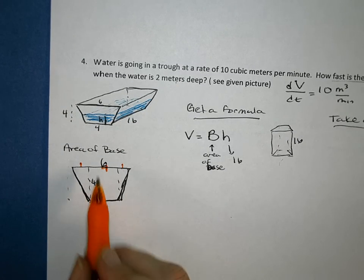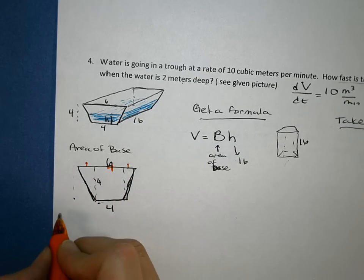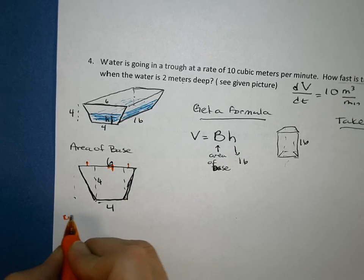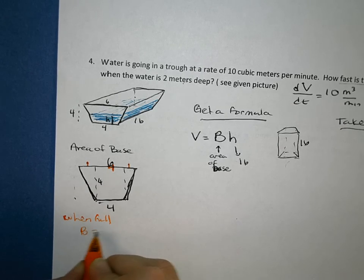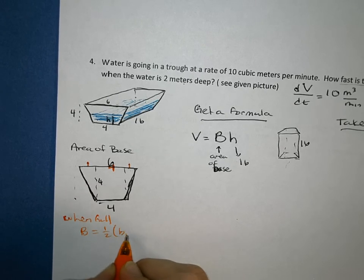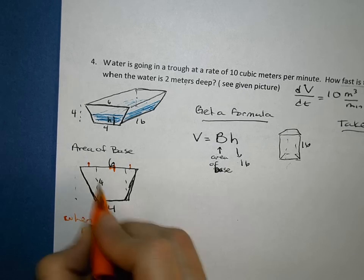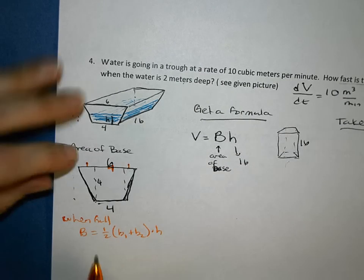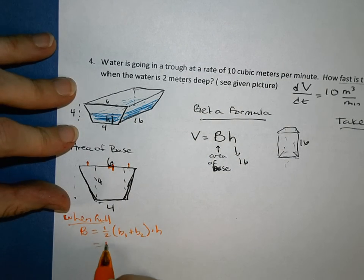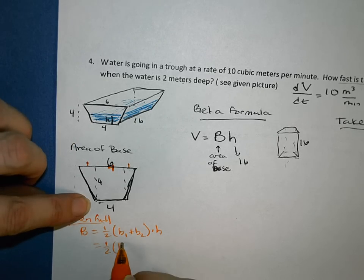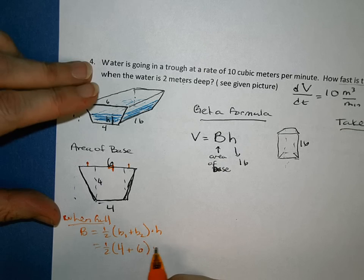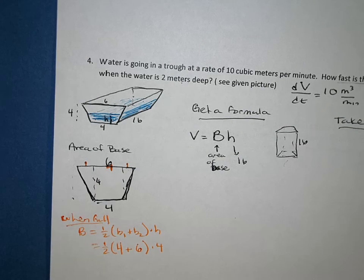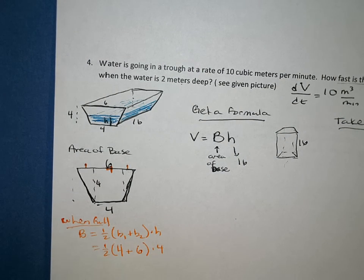But if we wanted the area of the whole thing, if the trough was totally full with water, then the area when full would be 1/2 base 1 plus base 2 times the height of this base. When it's full, that would be 1/2, base 1 would be 4, base 2 would be 6, and the height when it's all the way full would be 4. And we could work that out: 10 times 4 is 40, half of that is 20. That's good when it's full. But it's not all the way full.